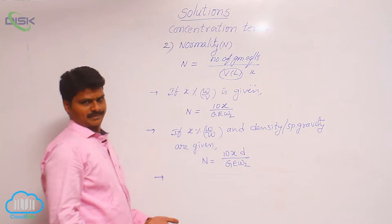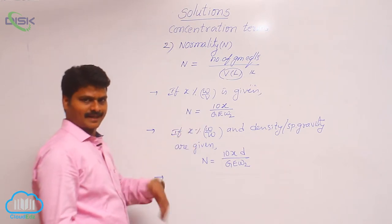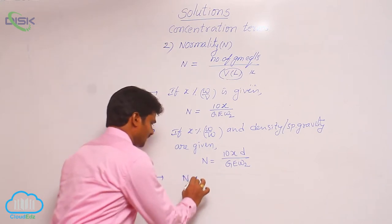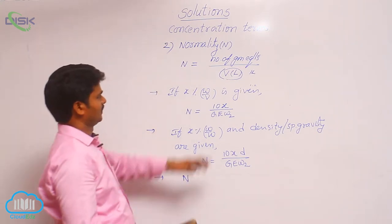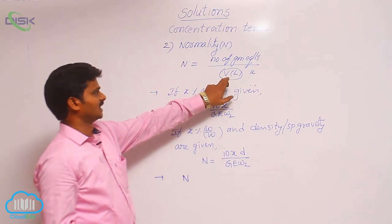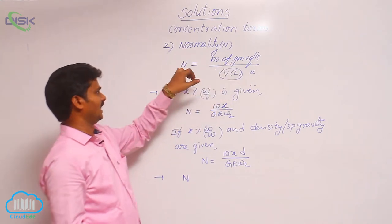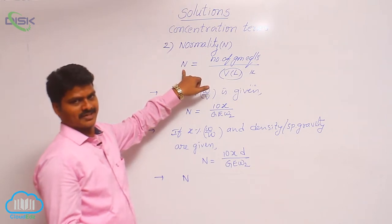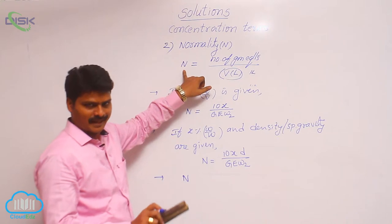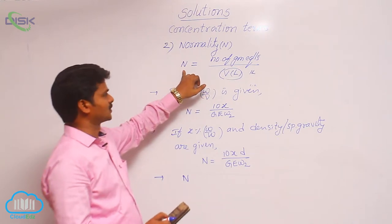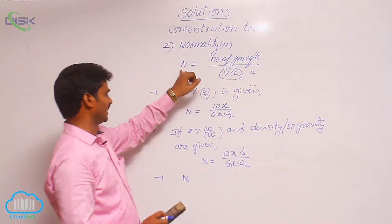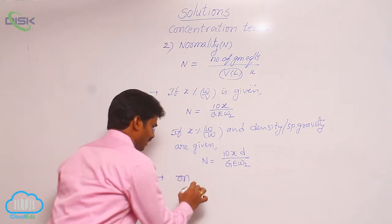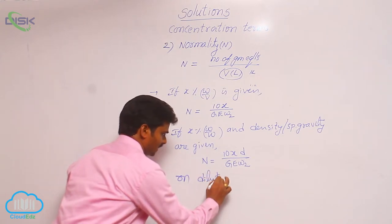Next, dilution. Just like in molarity, normality decreases with an increase in dilution. This is because there is a volume term in the denominator — if V increases, normality decreases. Dilution means an increase in volume; addition of water to the solution is called dilution. So during dilution, volume increases and therefore normality decreases.